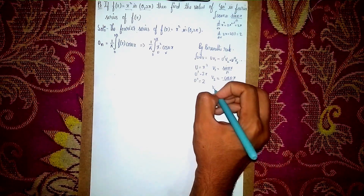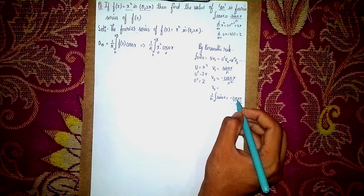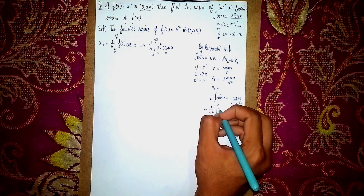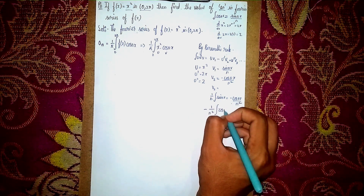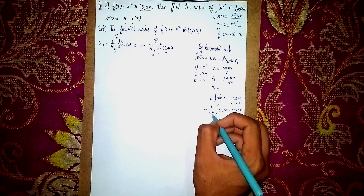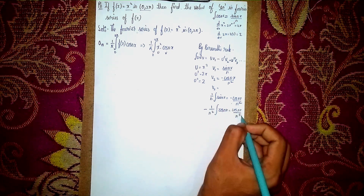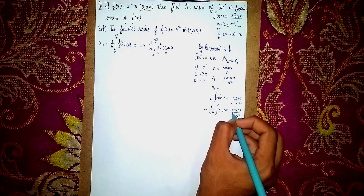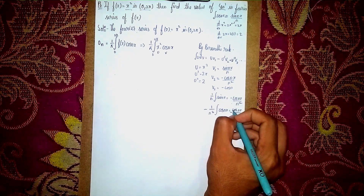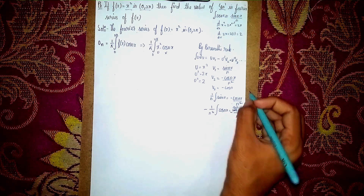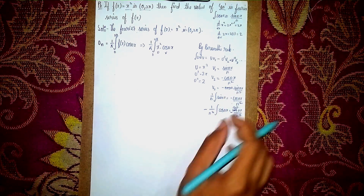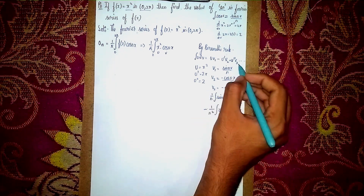Now v₃: integrating −cos(nx)/n², we take 1/n² outside and integrate cos(nx), giving sin(nx)/n. Sending n² to the other side gives n³, so v₃ = sin(nx)/n³. We found all three v terms needed since u'' is a constant — one extra step after u'' is sufficient.